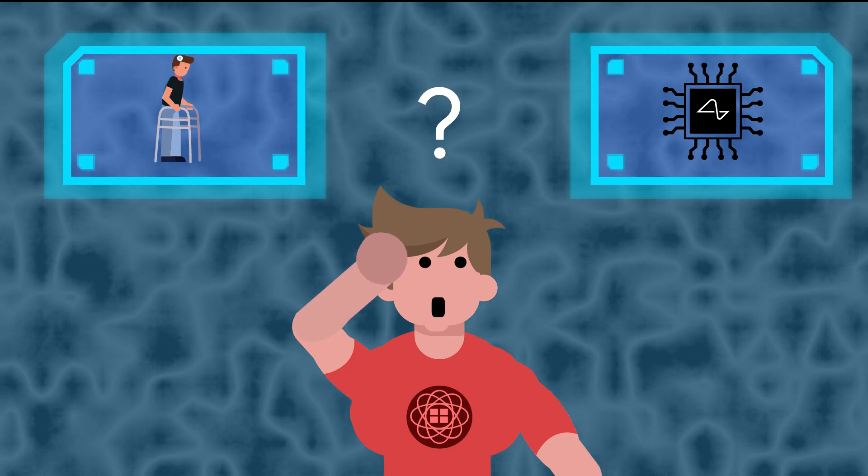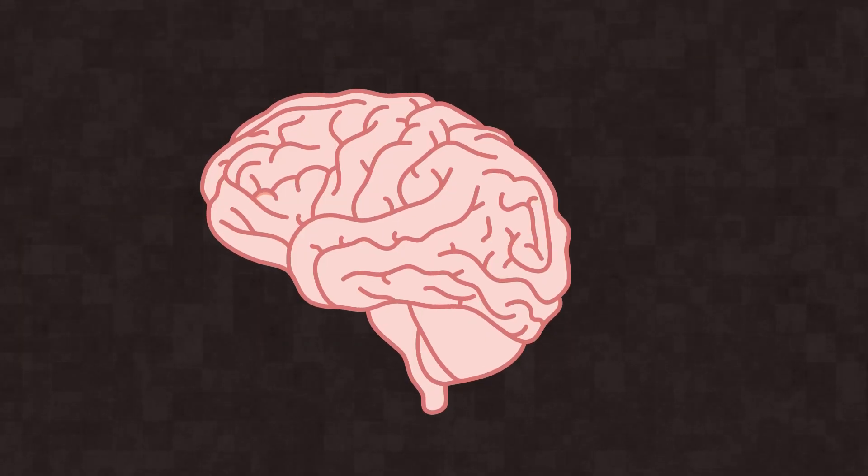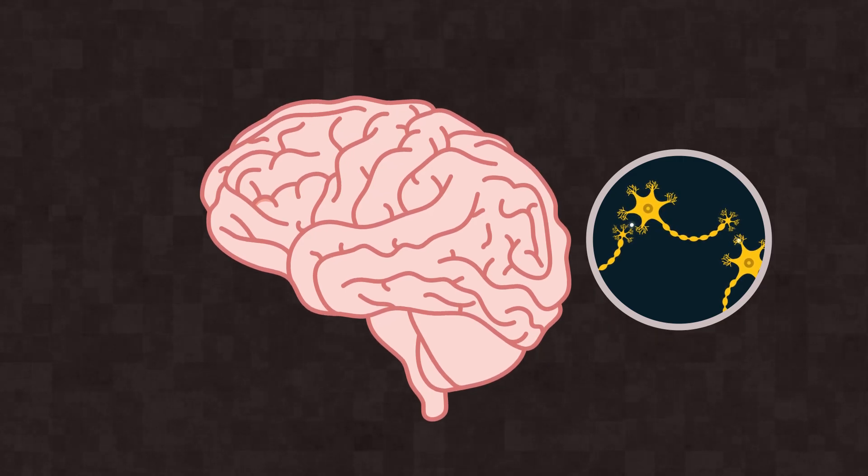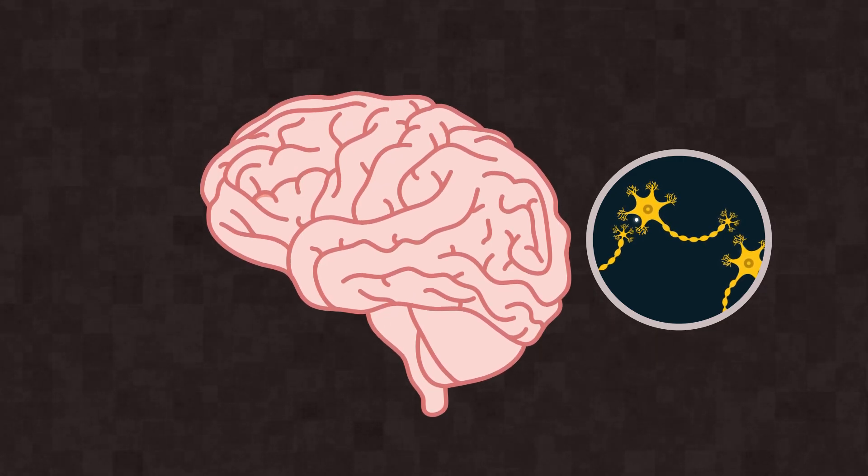Well, the first thing to understand is that our brain is essentially a bunch of cells called neurons, which fire in a complicated pattern of electrical signals.